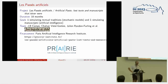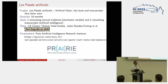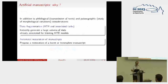All of what I'm going to present is done in the context of the project 'Artificial Past: Lost Texts and Manuscripts that Never Were', funded by the Paris Artificial Intelligence Research Institute. It's a project with two different aspects: one is a simulation of textual tradition using tools from complex systems, and the other is the generation of artificial manuscripts using artificial intelligence. That second part is what I'm going to focus on.